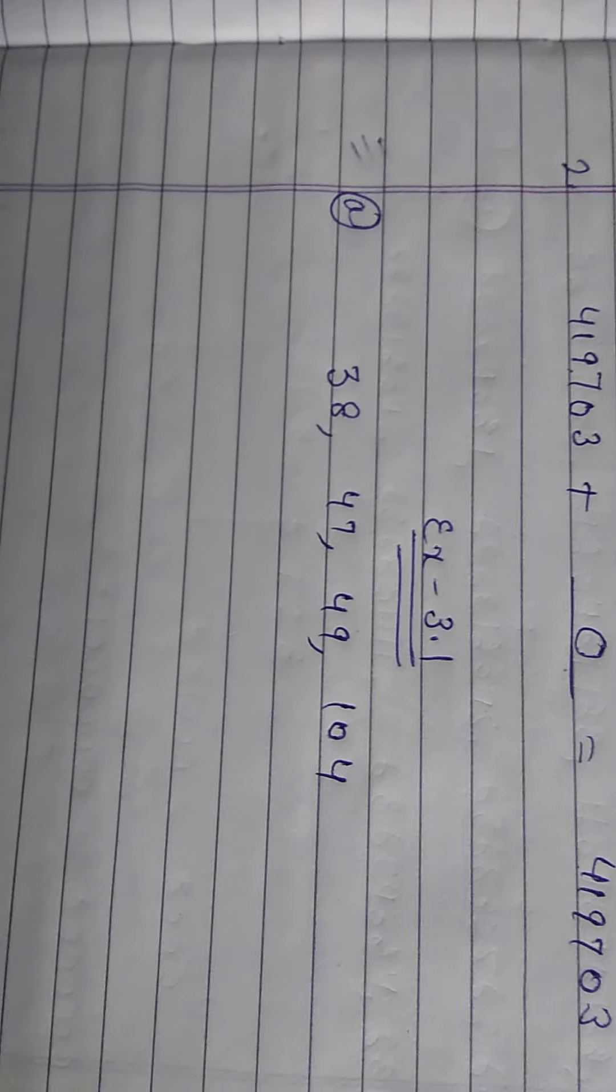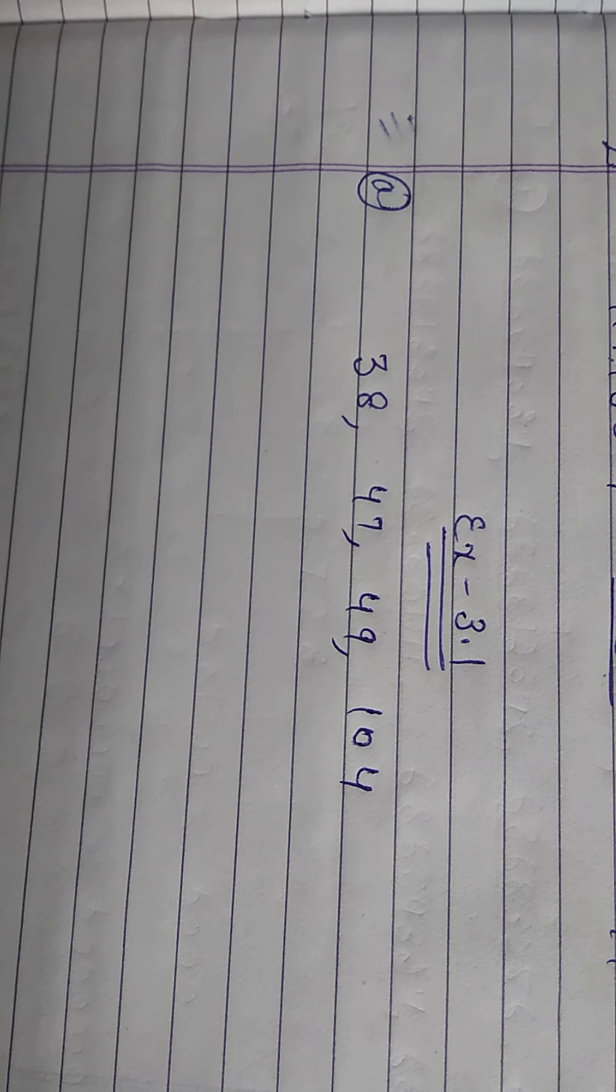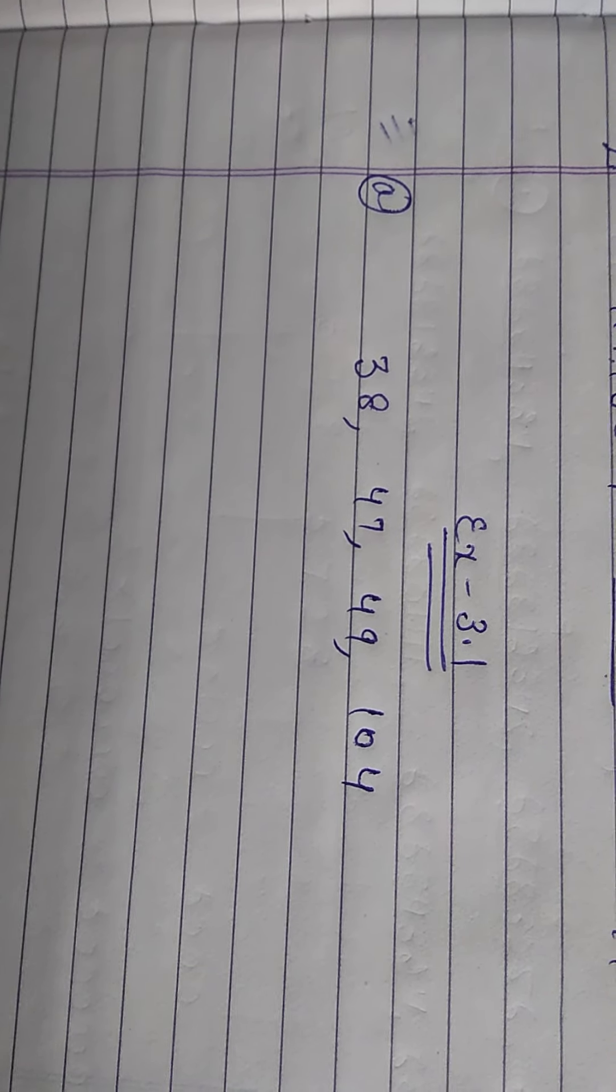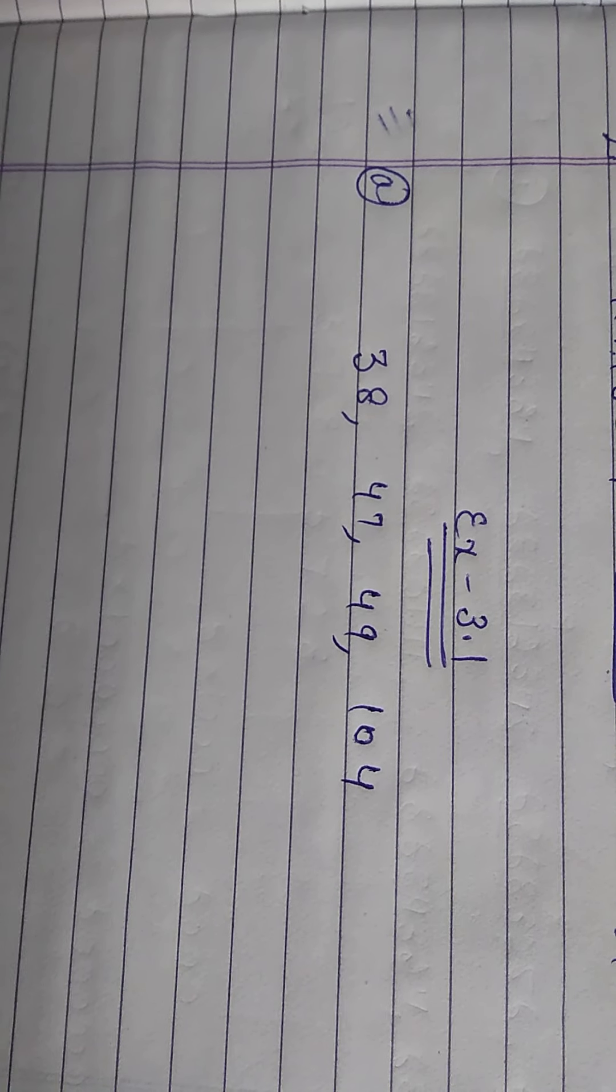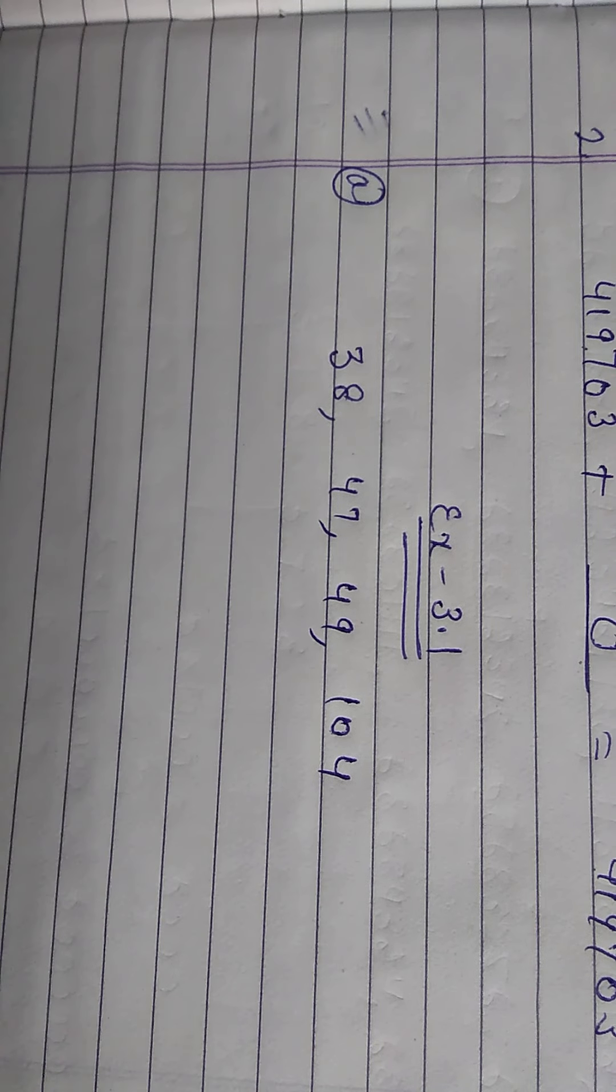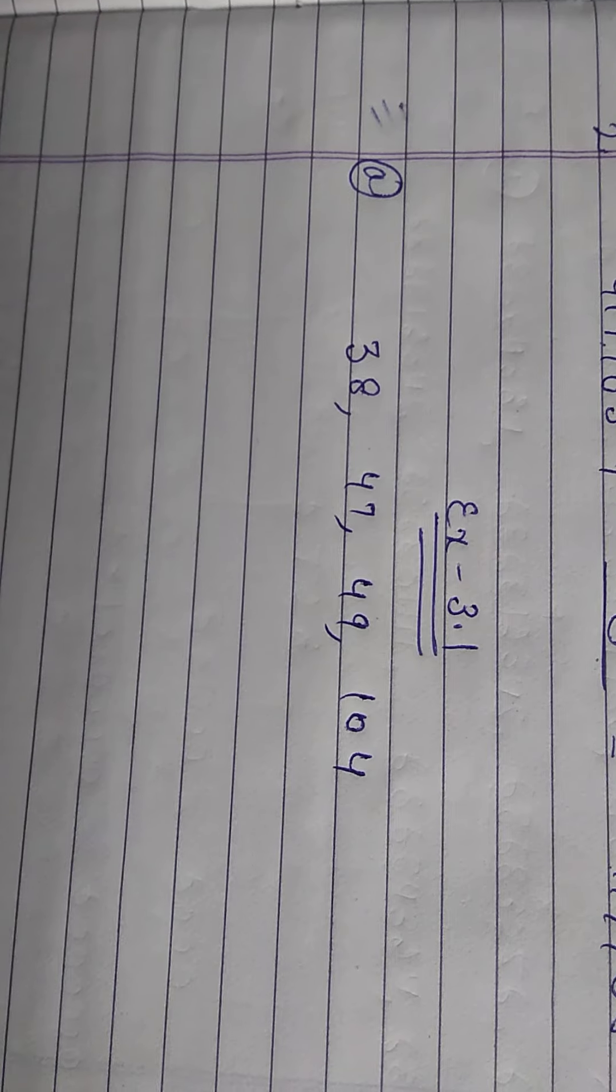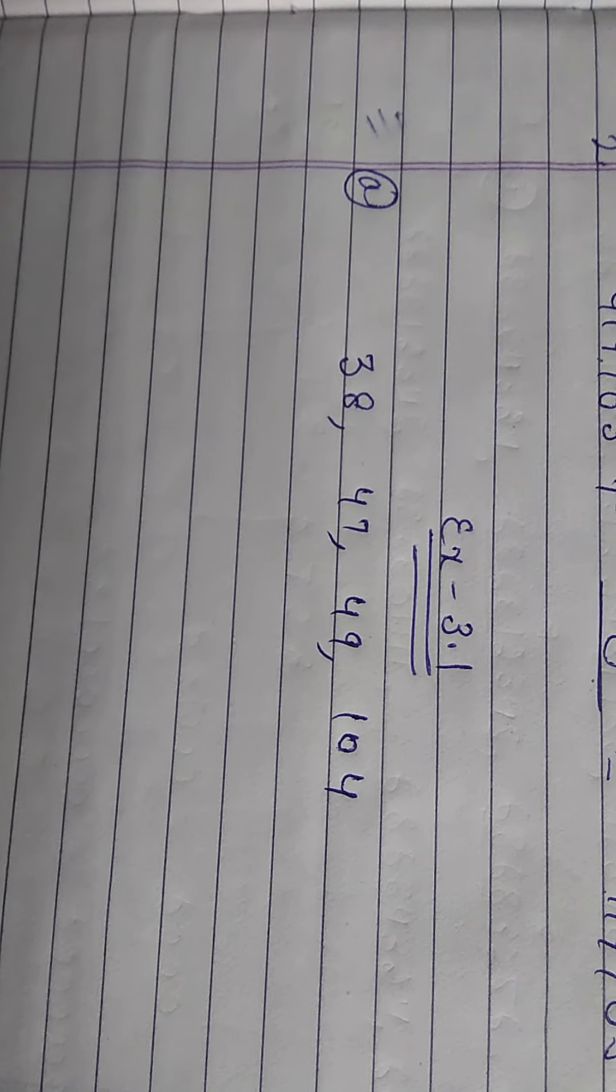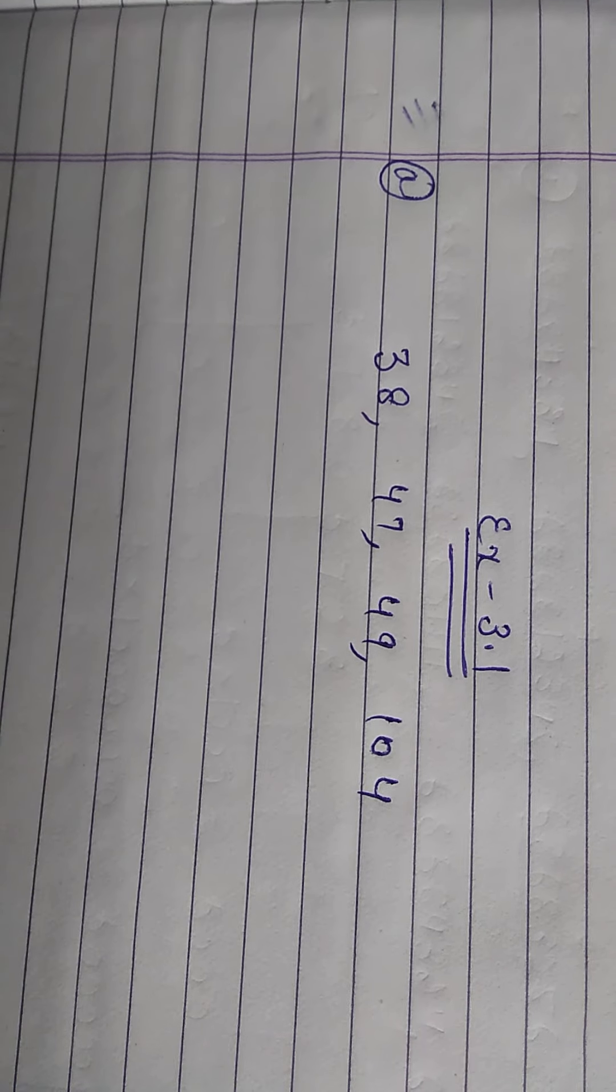Question number 3rd is 38,47,49,104. Next term is 3,24,56,789. Whenever we are going to arrange any given numeral in the form of column then we are starting from right hand side.